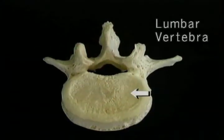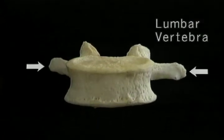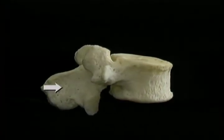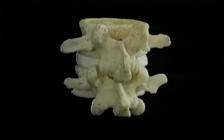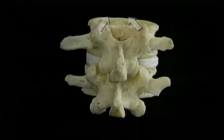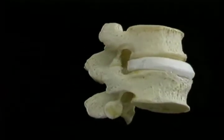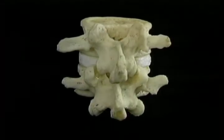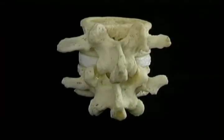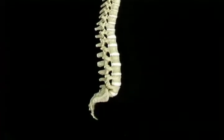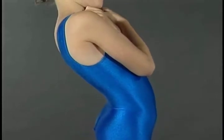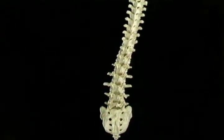Now we'll take a look at a lumbar vertebra. The body is massive. The transverse processes are small. The spinous process is broad and points almost straight backwards. The upper articular processes of lumbar vertebrae face inward; the lower ones face outward. Because of this arrangement, there's almost no rotation between lumbar vertebrae. The movements that can occur in the lumbar spine are flexion and lateral flexion to either side.